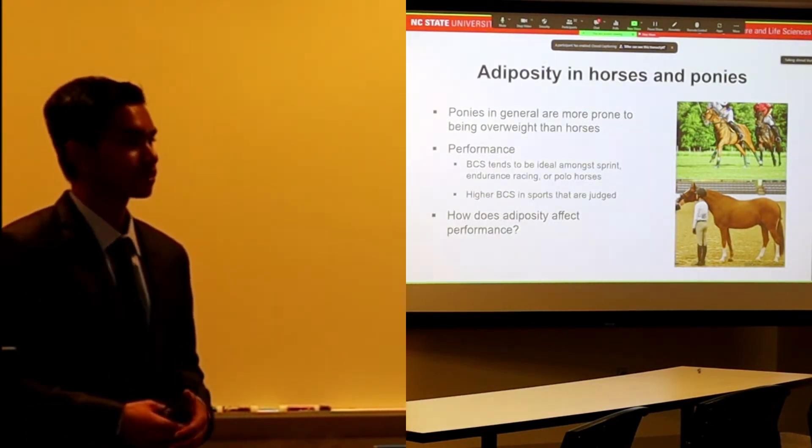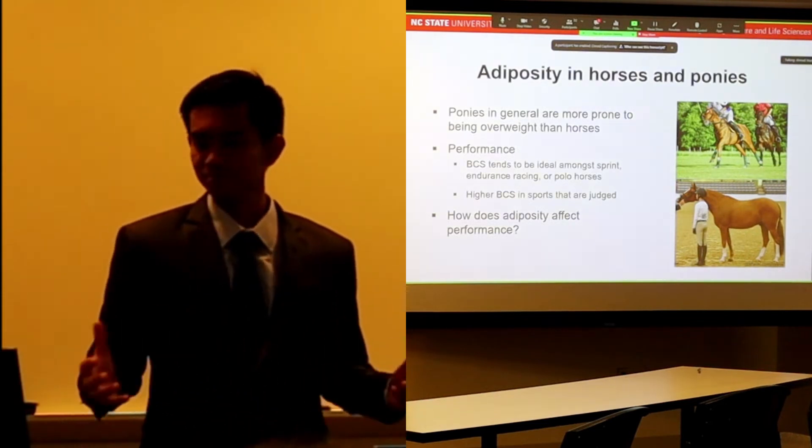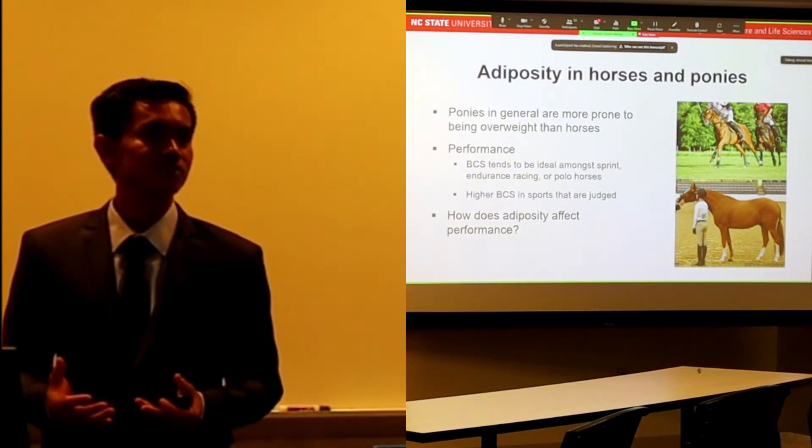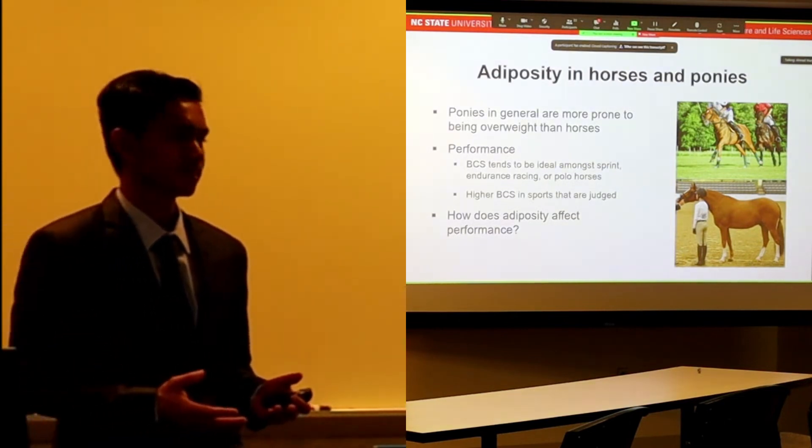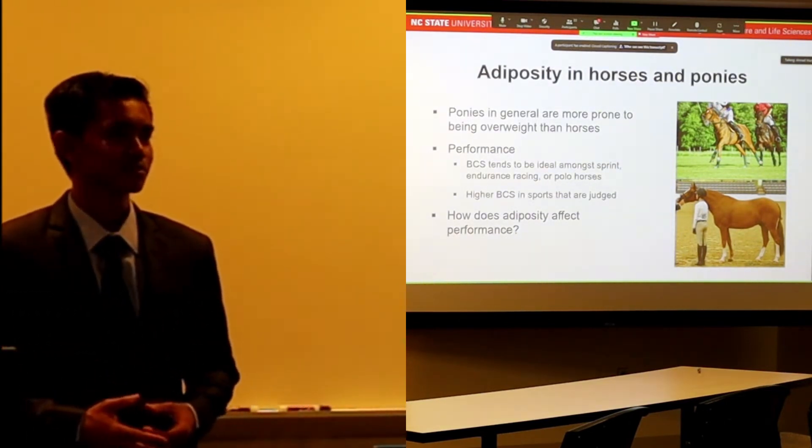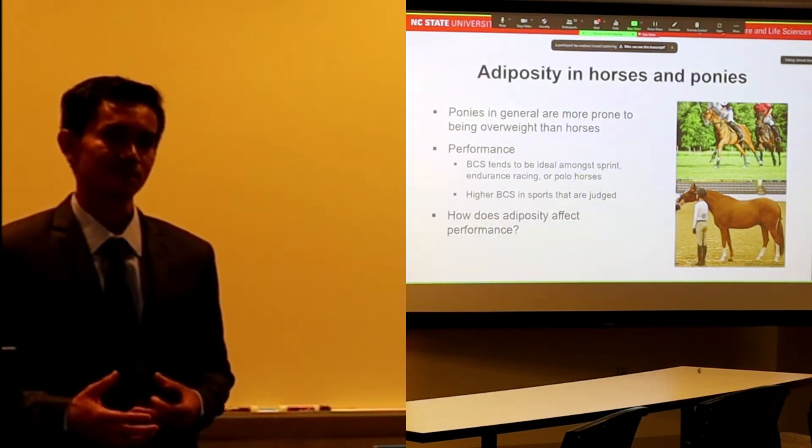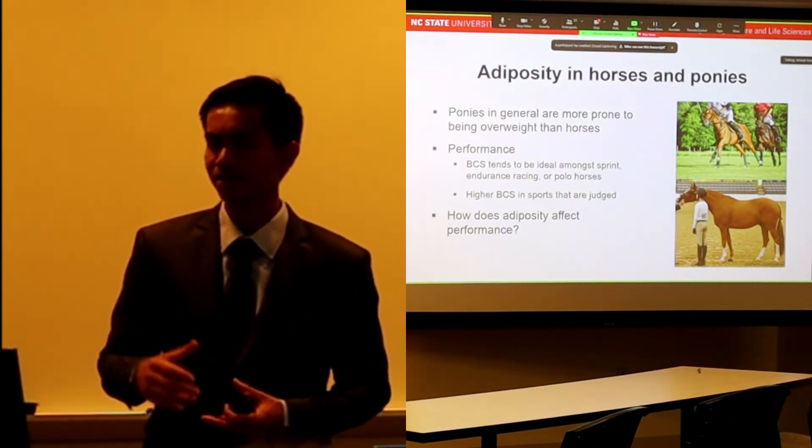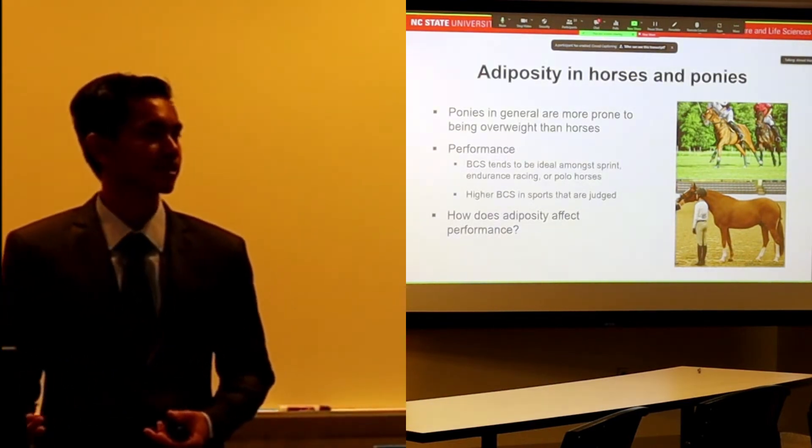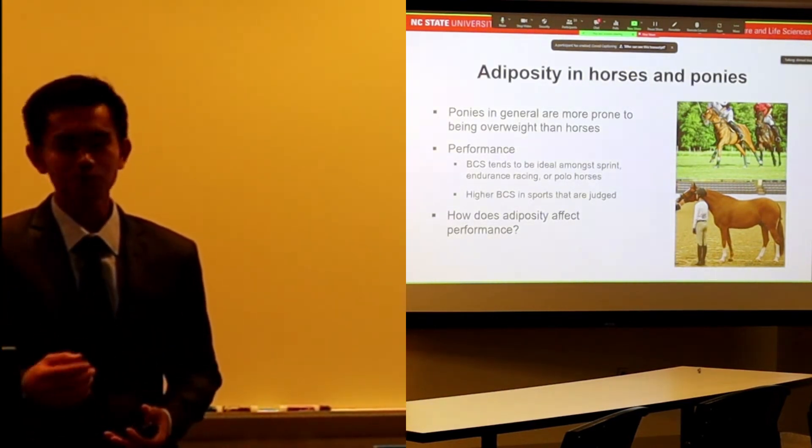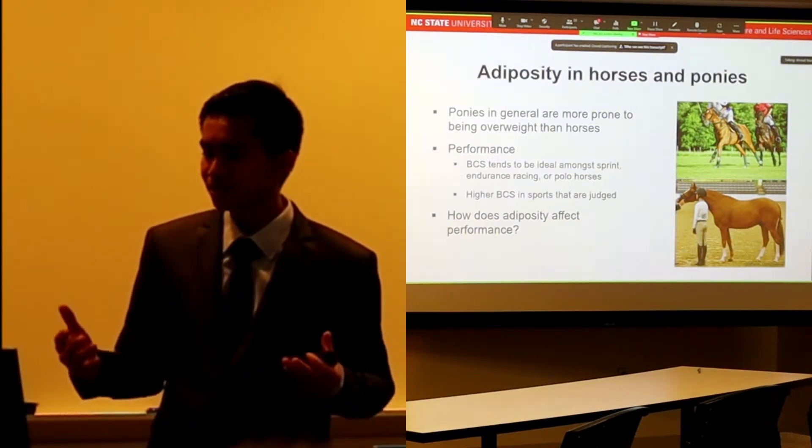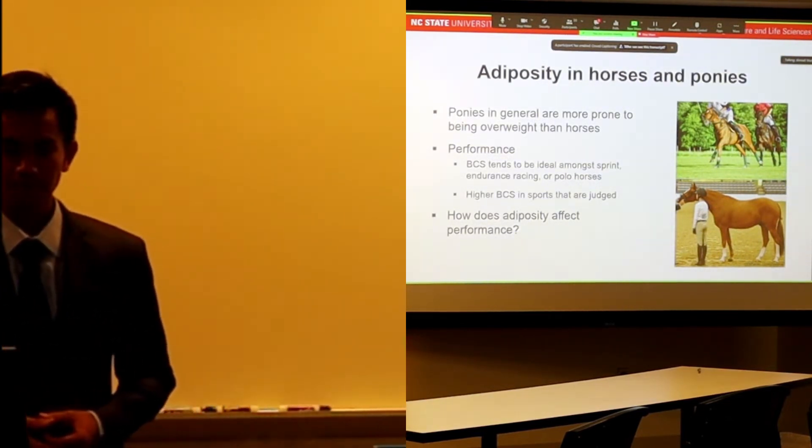If we look at different populations of sport horses and ponies, in sports that are usually not judged, like racing or polo, body condition scores are quite ideal around 5. But in sports that are judged, like hunter ponies, they usually have 6 body condition scores - in other words, they are usually fatter.